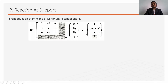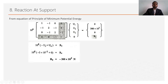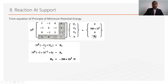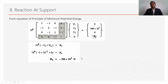Using the last row of the global stiffness matrix multiplied by the displacement vector equals R4: 10⁸ × (0·u1 + 0·u2 − 1·u3 + 1·u4) = R4. Substituting −u3 = −3 × 10⁻³ and u4 = 0, we get R4 = −300 × 10³ N.